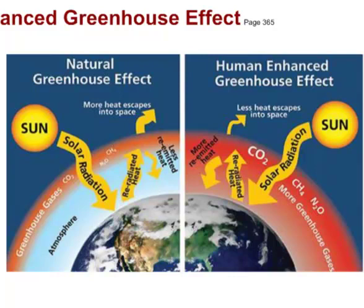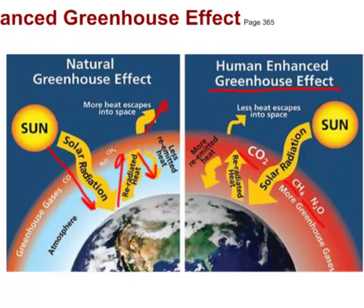The Earth has a natural greenhouse effect too. Just like in a greenhouse, solar radiation comes in, strikes the Earth, and is re-radiated as heat, much of which gets reflected back by the atmosphere. A lot of what keeps our planet as warm as it is comes from this natural greenhouse effect. What we'll be concerned with in this unit is the human-enhanced greenhouse effect — whether the gases CO₂, methane, and N₂O that we've added to the atmosphere have made the greenhouse effect even stronger, causing the Earth to retain even more heat than it naturally would.